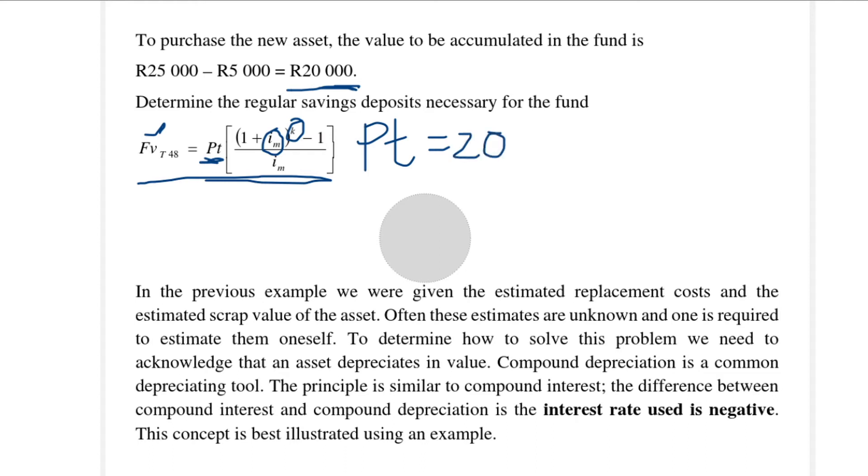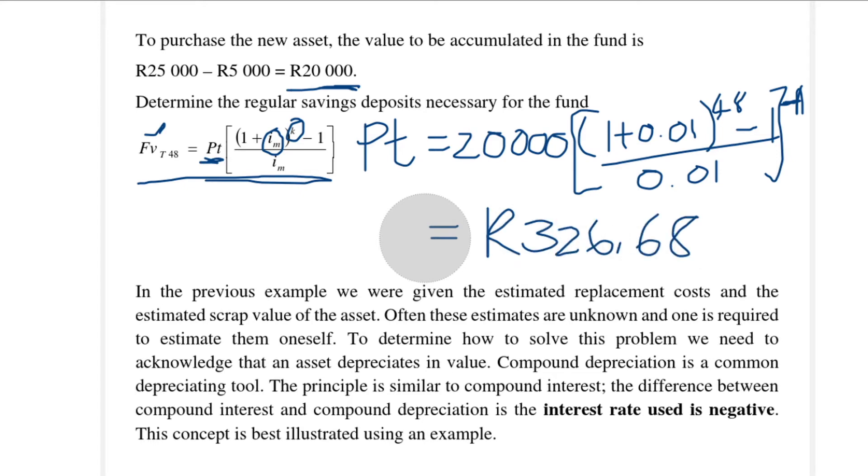The payment is calculated with the future value of R20,000. The 0.01 is just the 12% per annum compounded monthly, so the 0.01 is my effective monthly interest rate, and it's on a monthly basis for four years so my k is 48. So R326.68 is what we need to deposit on a monthly basis. In this example we were given the estimated replacement cost and the estimated secondhand value of the asset.